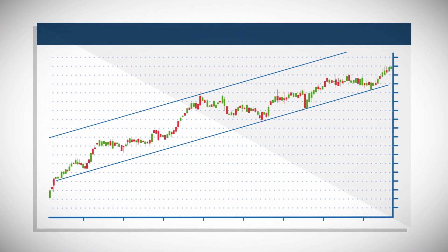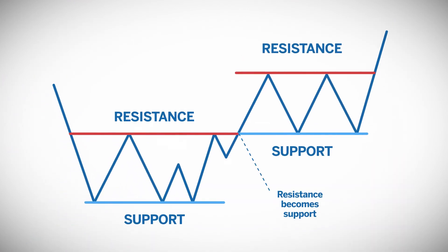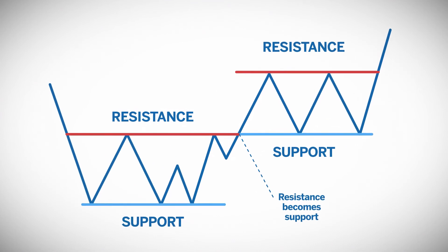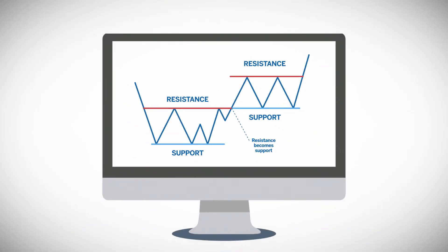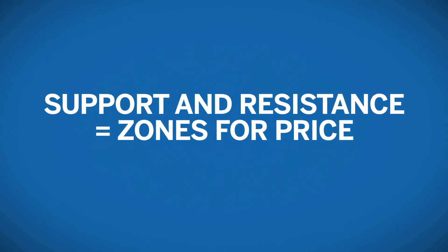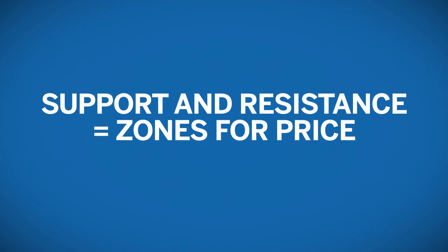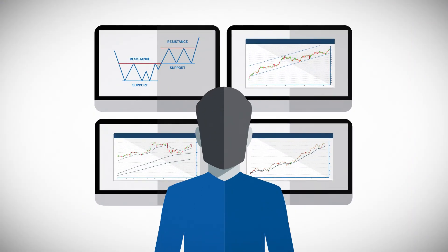The same lines can be drawn for markets that are in a downtrend. Levels of support and resistance offer traders insights into areas where price might stop trending and retrace, or where retracements might stop and price will begin to move in the direction of the original trend. Traders should be aware that support and resistance will not always hold to the penny. Rather, they are zones that can be identified in a market which might be favorable for traders to enter or exit a trade. Support and resistance levels offer traders another piece of information they can use to assess the markets.